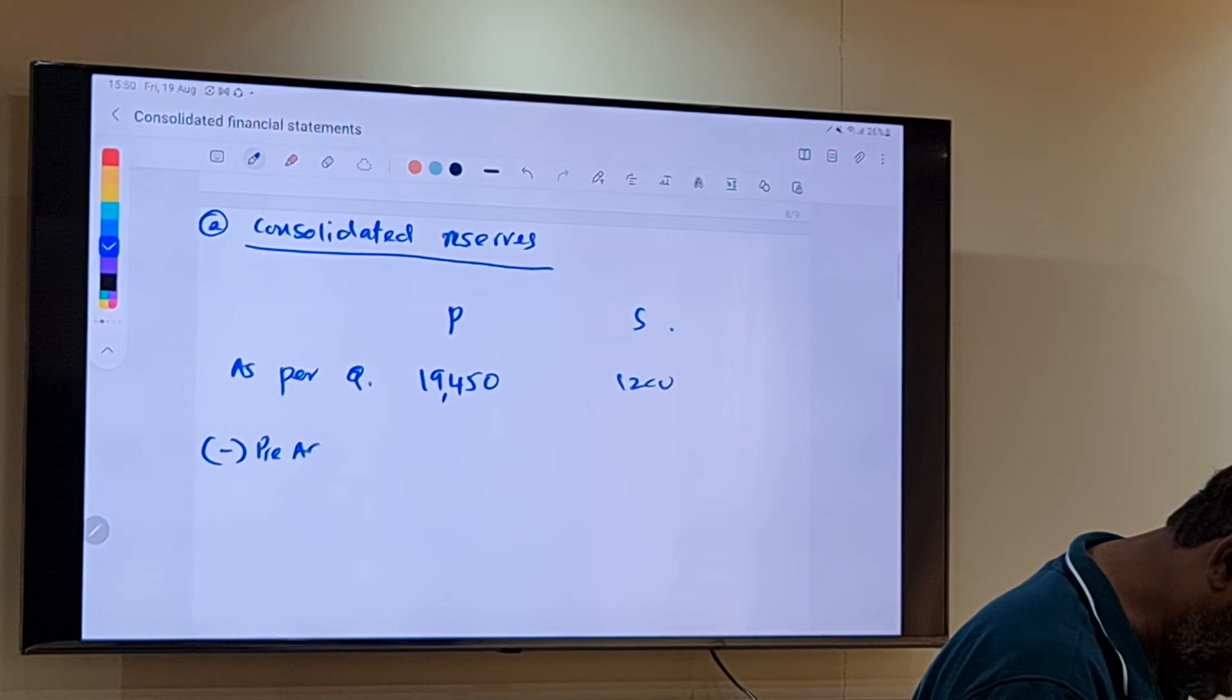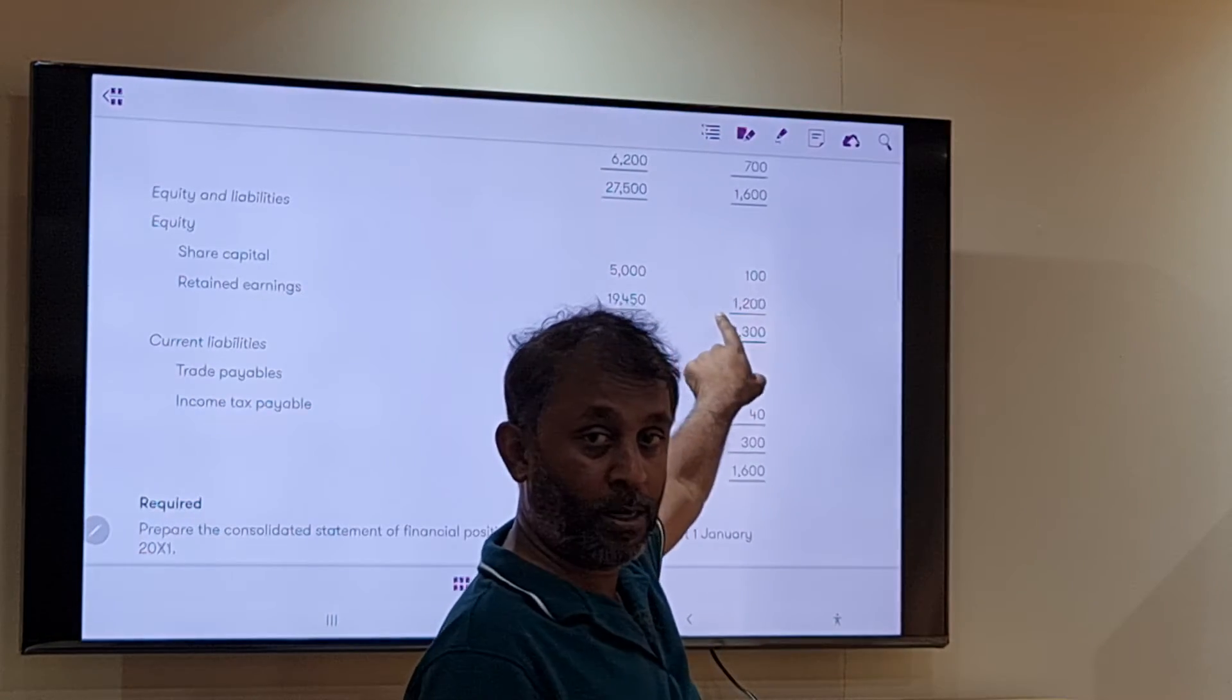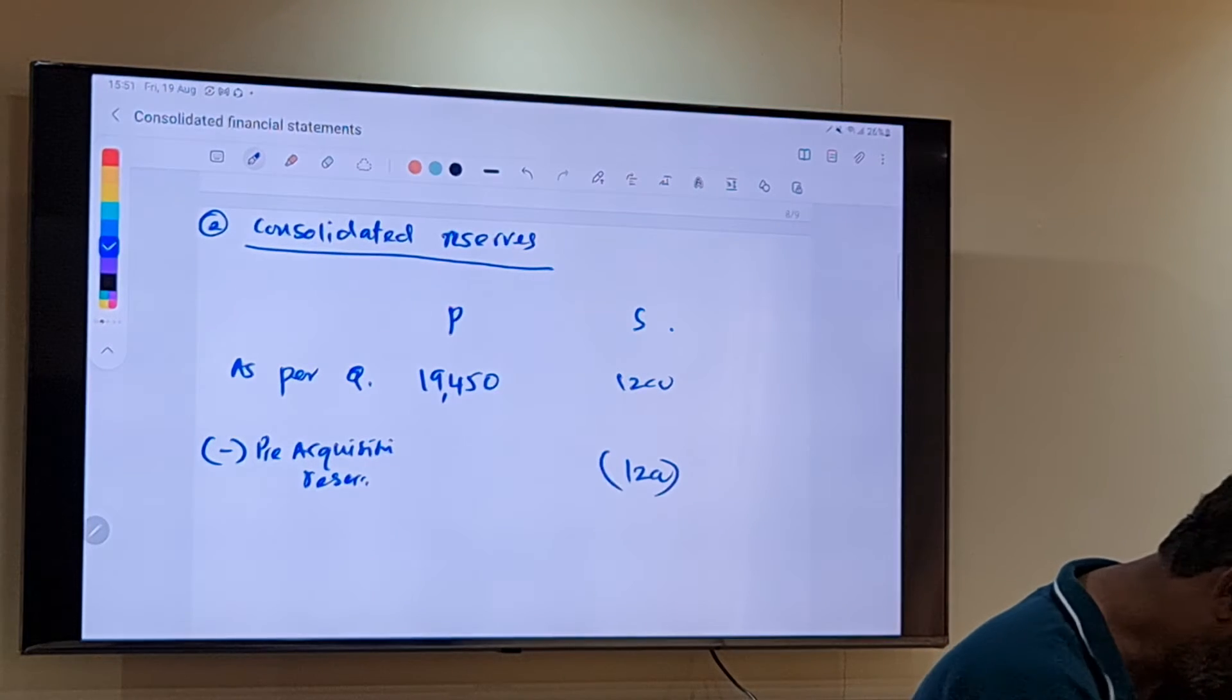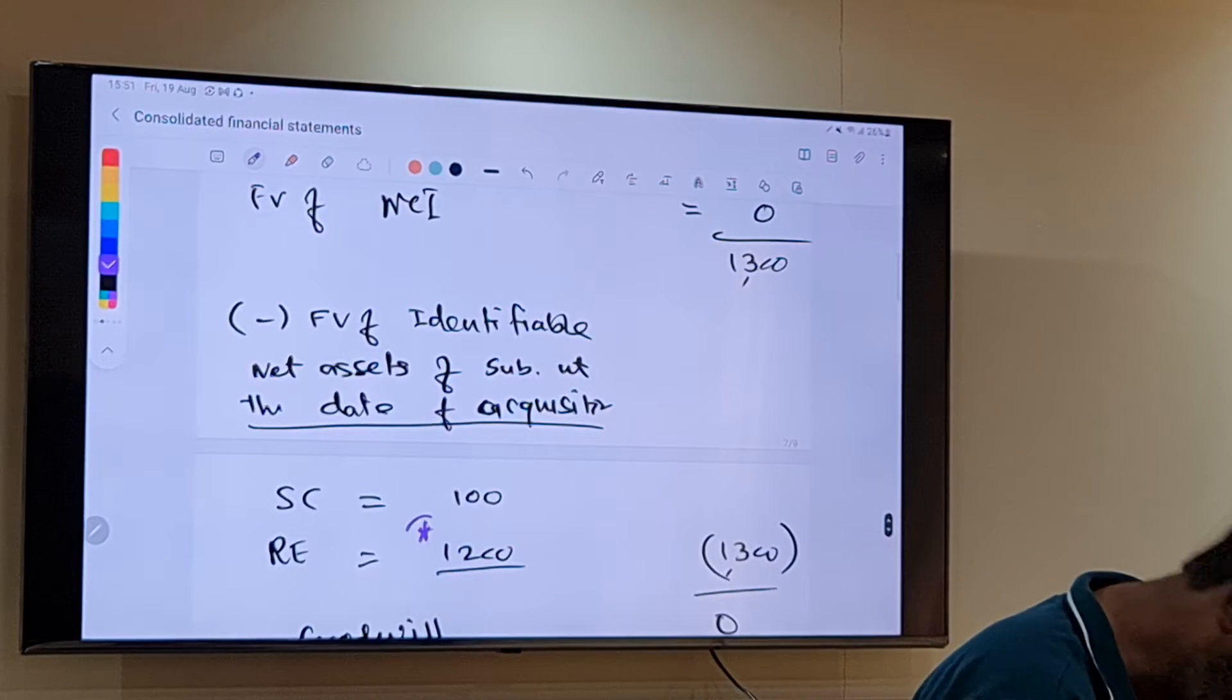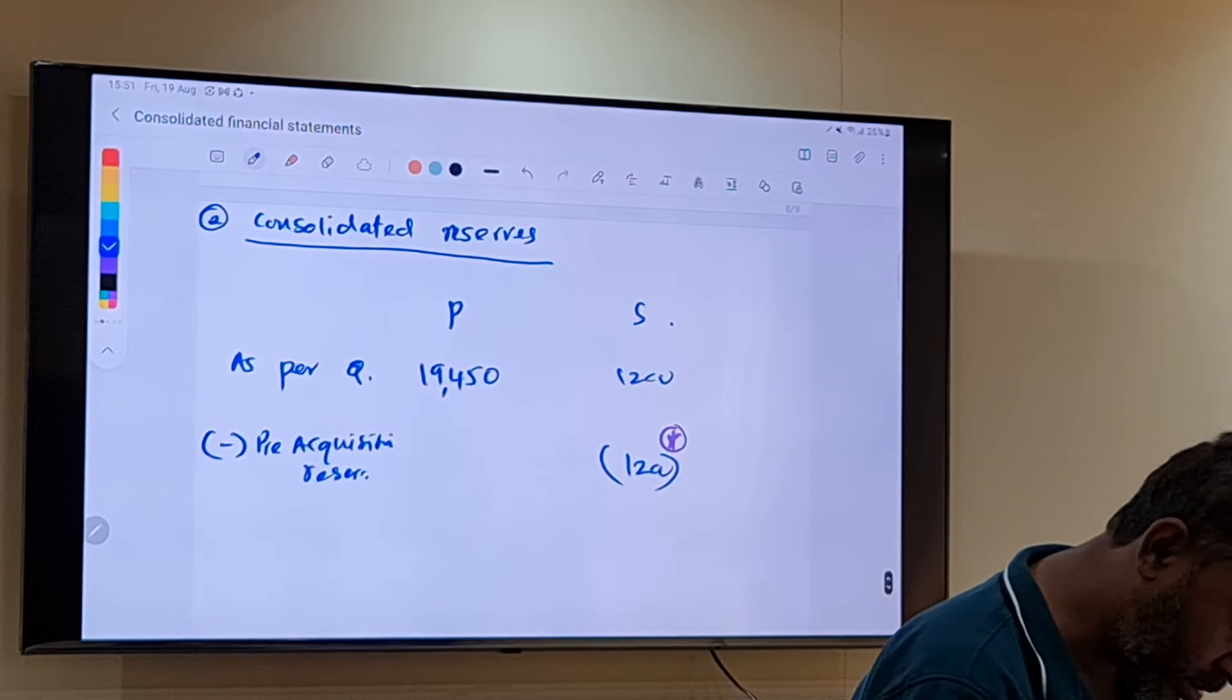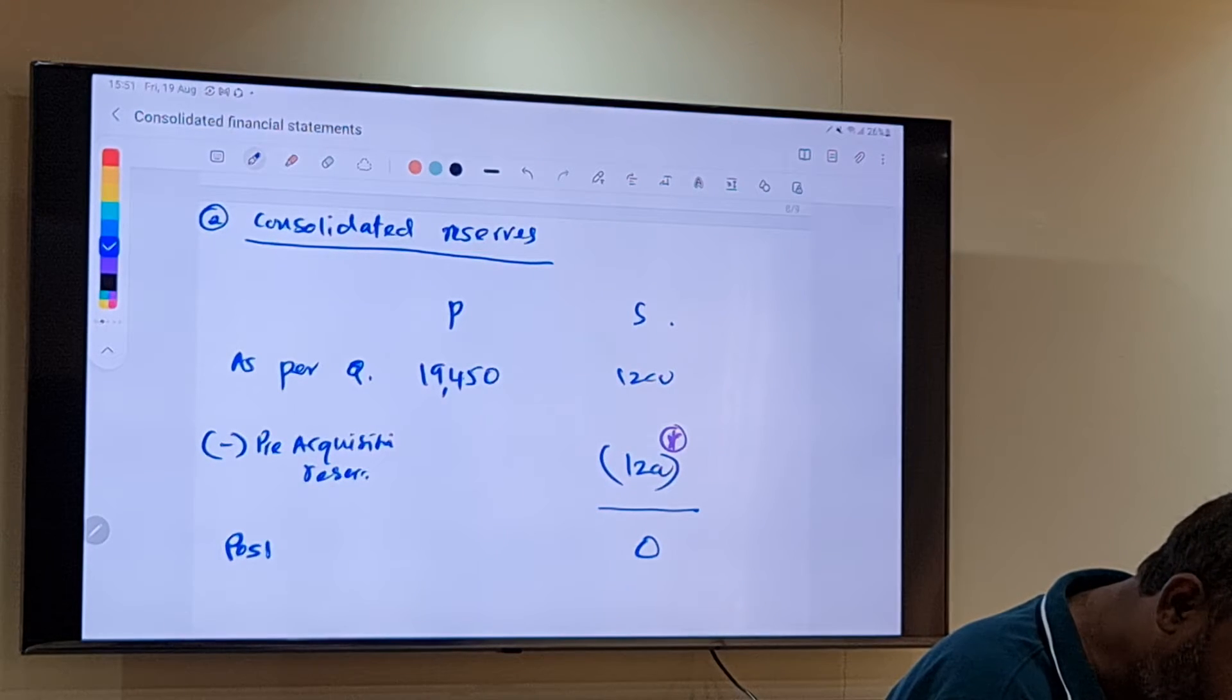What we need to do now, we should subtract pre-acquisition retained earnings. How much? At the date of acquisition, the entire 1,200 they are having, right? So what we need to do is remove this out. This only I have taken here, I took it out from there and used it to calculate the goodwill. So what is the answer? Zero. This is known as the post-acquisition retained earnings.